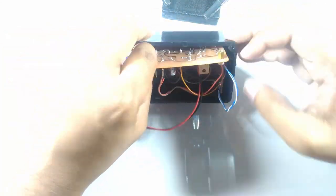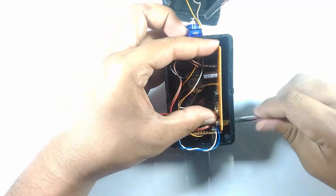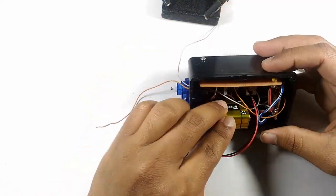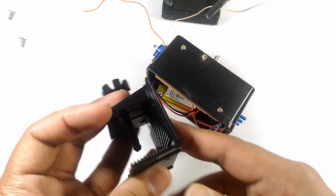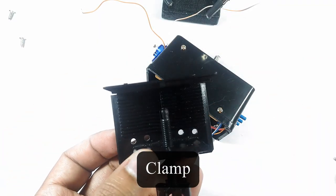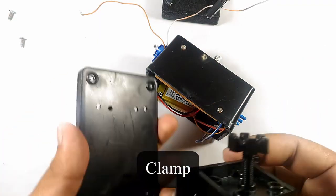Afterwards, I passed the wires for the micro switch through the small opening near the servo and screwed the PCB onto the casing. I fixed a plastic clamp onto the bottom cover of the casing so that the feeder can be mounted on an aquarium.